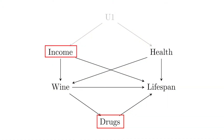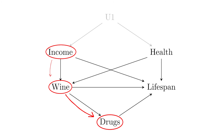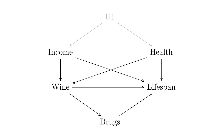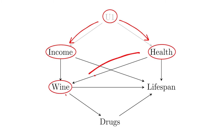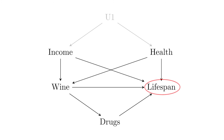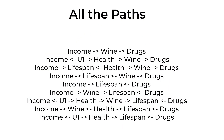If we shut down every single pathway between two variables and they're still related to each other, there must be some pathway we've left out of our diagram — something we're not conditioning or controlling for — that we need to account for to get the right diagram and identify our effect of interest. Let's do an example using the wine and lifespan diagram. Let's pick two variables: drugs and income. The first thing we want to do is think about all the pathways between drugs and income.